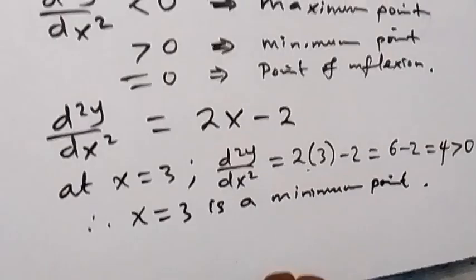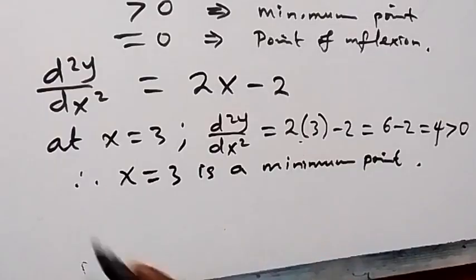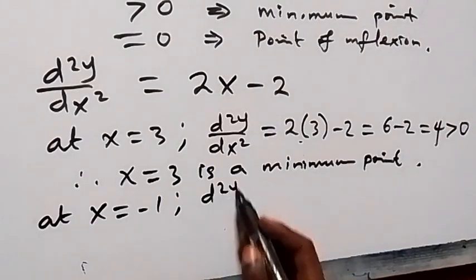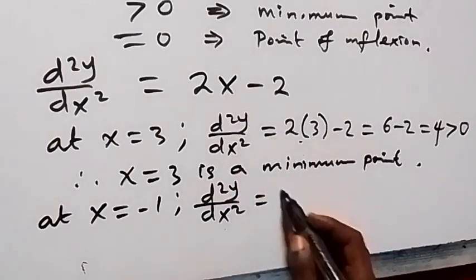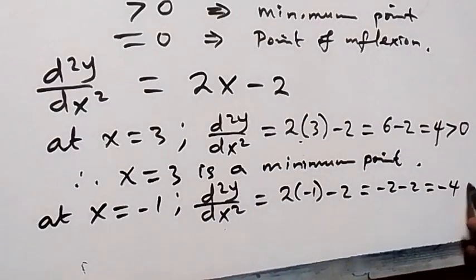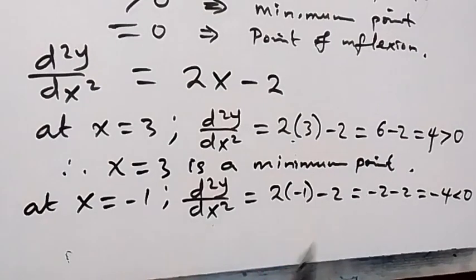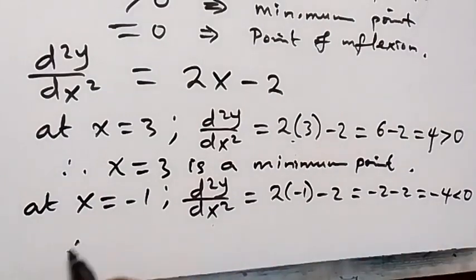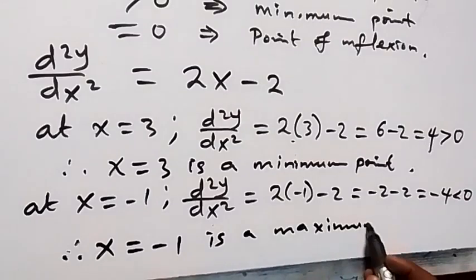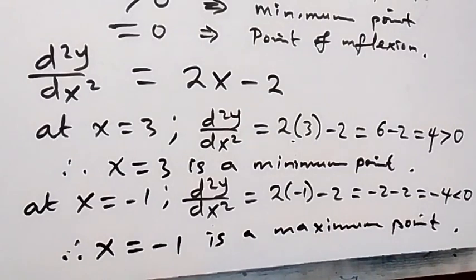Now let's investigate the second turning point, x equals minus 1. At x equals minus 1, d²y/dx² equals 2 times minus 1, minus 2, which gives minus 2 minus 2, equals minus 4. Since minus 4 is less than zero, x equals minus 1 is a maximum point. We can also find the maximum value by substituting x equals minus 1 into the given function.